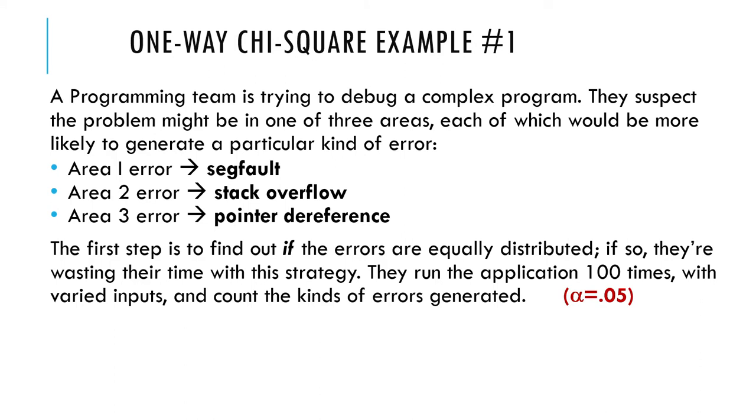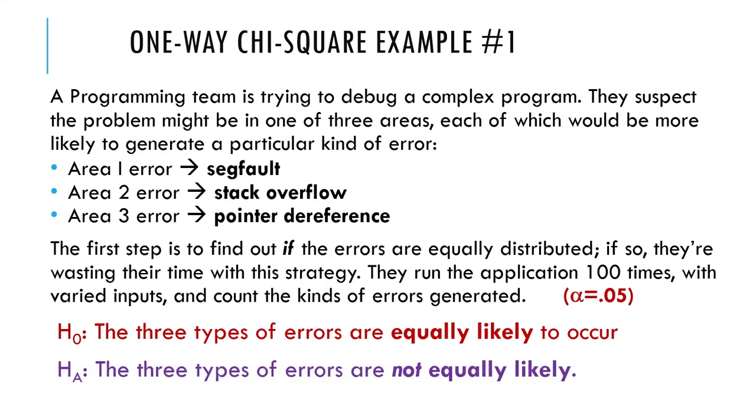As you can see at the top of this slide, this is called one-way chi-square. One-way means your table is just one frequency table, a one-dimensional frequency table with some categories. There's not two variables, there's just one variable. So the chi-square goodness-of-fit test is sometimes called a one-way chi-square. The null hypothesis that they have is that the three types of errors are equally likely to occur. That equal likelihood business came from the wording here.